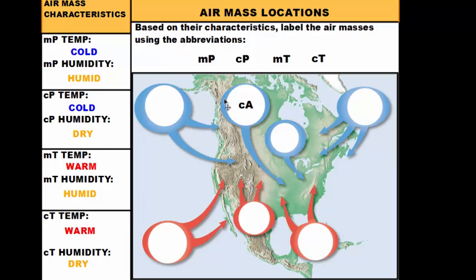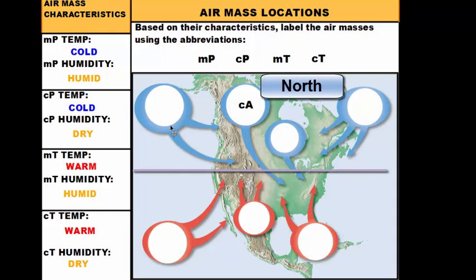So what you want to do is look at the region where the source region is forming. This source region is up in the north, so the temperature is going to be cold, and it forms over the water, so since it's over the water it is humid. Taking those two characteristics — cold and humid — cold means polar, and over the water means maritime. You always write humidity first, then temperature second, so this air mass is going to be a maritime polar air mass. Skipping across the map, we have another body of air that forms in the north, making it cold, and also over the water, making it humid — so that's a second maritime polar air mass.